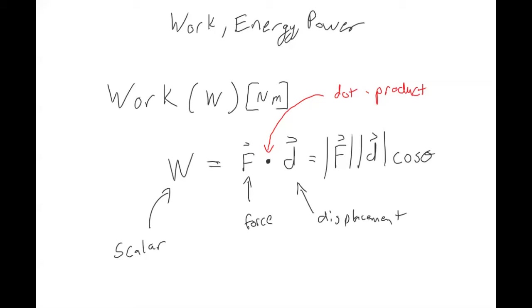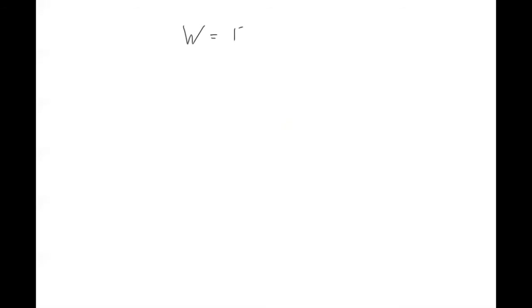Let's look at a couple of examples of what this dot product would look like. In the first picture, the force and the distance are perpendicular to each other. In the second example, the force is down and the displacement is also down.